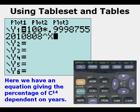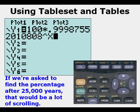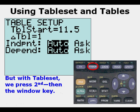Here we have an equation giving the percentage of carbon-14 dependent on the number of years. If we're asked to find the percentage of carbon-14 after 25,000 years, that would be a lot of scrolling, but with table set we can go to second window and change that table start to 25,000.